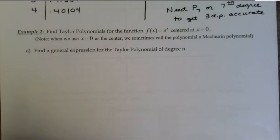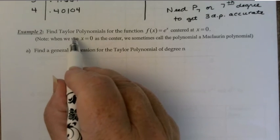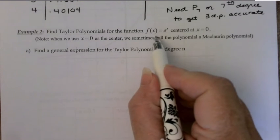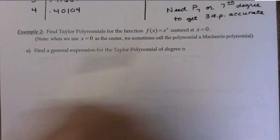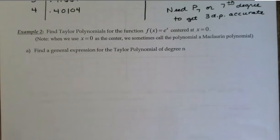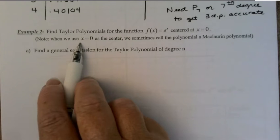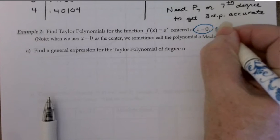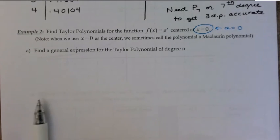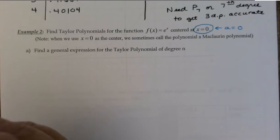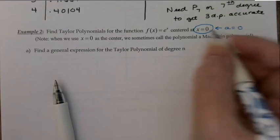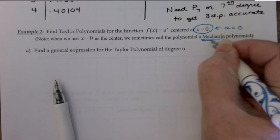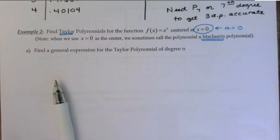In example 2 on page 5, we are supposed to find Taylor polynomials for the function f(x) = e^x, centered at x = 0. A quick definition: when we use x = 0 as the center — defining the a value as 0 — we sometimes call our Taylor polynomial by another name: the Maclaurin polynomial. Taylor and Maclaurin are just two mathematicians that did a lot of work on these things, so that's where the names come from.